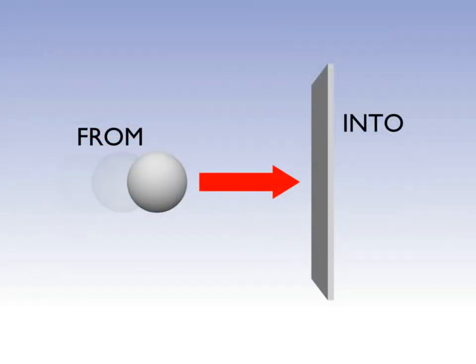You have probably wondered by now what do from and into objects mean. The Panda collision system separates collision objects to from and into objects. As you guessed by the names, the first only collides with something else in the world. The other only receives collisions. Some shapes can be used for both. Like ray can only be a from object because it has no volume.